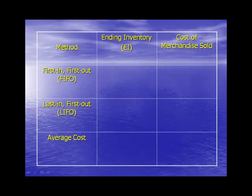Here's a grid I've developed that shows the method along the left-hand column, ending inventory in the second column, and cost of merchandise sold on the right-hand column. First in, first out says the first goods in are the first ones to sell — that's a cost flow assumption. It doesn't mean that's the physical flow, but a company has to adopt one of these methods to price out the inventory and the cost of merchandise.